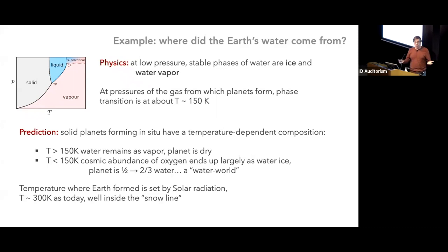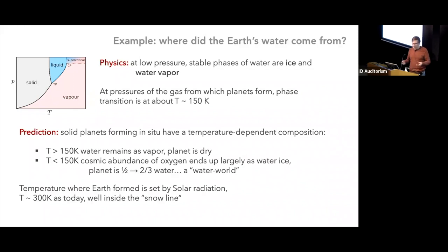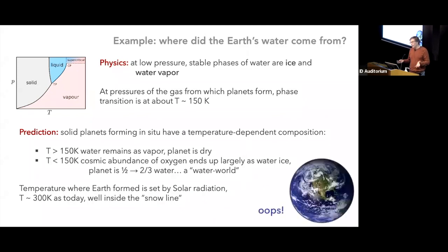For the Earth, you need to know the temperature where we are in the solar system before the Earth formed — when there was just gas and dust in orbit around the Sun. That temperature is set by roughly the same physics as today: the strength of sunlight, so about 300 K. The Earth is well inside the snow line, in the dry region of the planetary system. The prediction would obviously be that the Earth should be dry — but clearly that is not the case. This is an immediate failure of a very simple theoretical prediction.